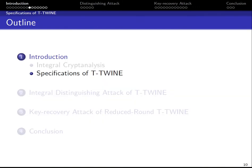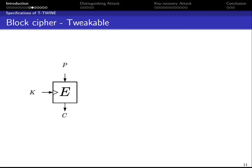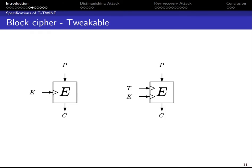I will now revisit the specification of T-Twine. Typically, a traditional block cipher takes two inputs — a block of plaintext and the secret key — to generate a ciphertext. Since the block cipher uses deterministic algorithms for encryption and decryption, every time we encrypt the same plaintext under the same key, we get the same ciphertext. So to get a different ciphertext, we have to change the secret key, which may be expensive.